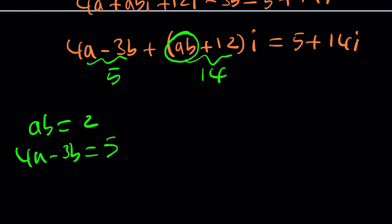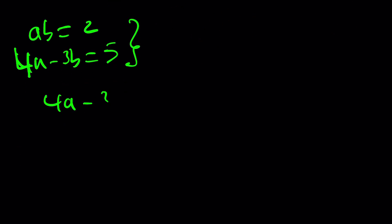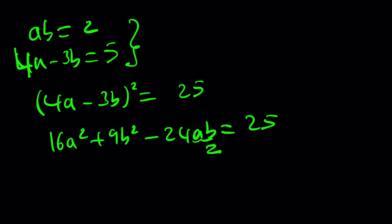Let's find the other solution because we didn't do it with the first method. Please use the first method to find the second set. I can replace b with 2 over a, but that's going to give me a quadratic. Is there another way to do this? Yes, I can actually go ahead and square this. That's going to be 25. And that'll give me 16a squared plus 9b squared minus 24ab equals 25.